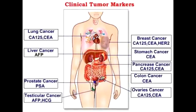Why are tumor markers useful? Tumor markers are useful in confirming diagnosis of cancer. They also help us monitor tumor recurrence and to monitor response to therapy. However, tumor markers should not be used as a primary tool for cancer diagnosis.